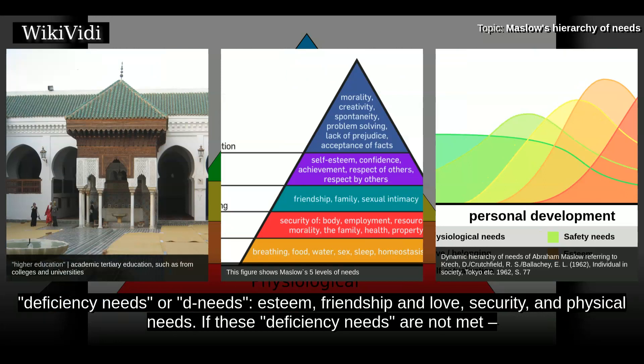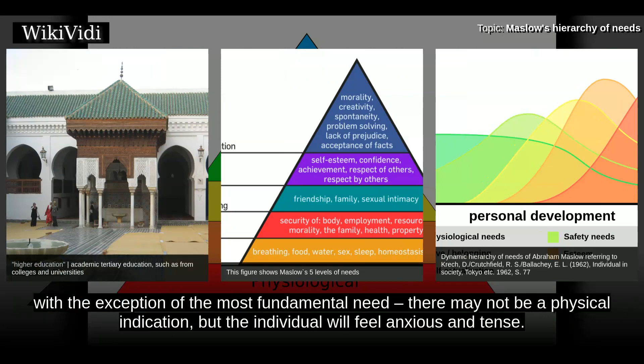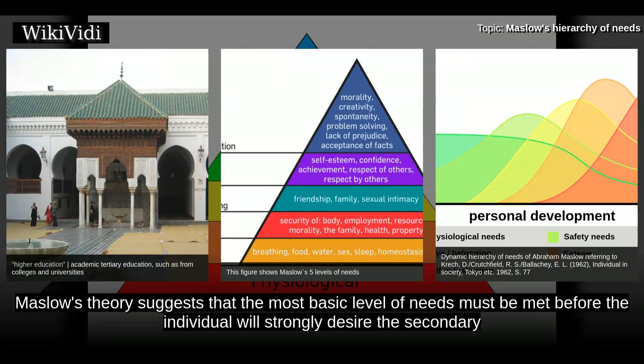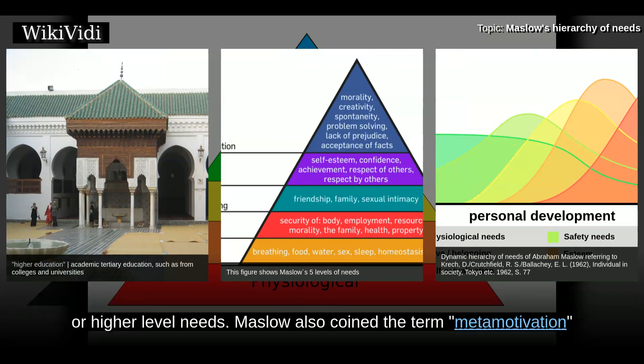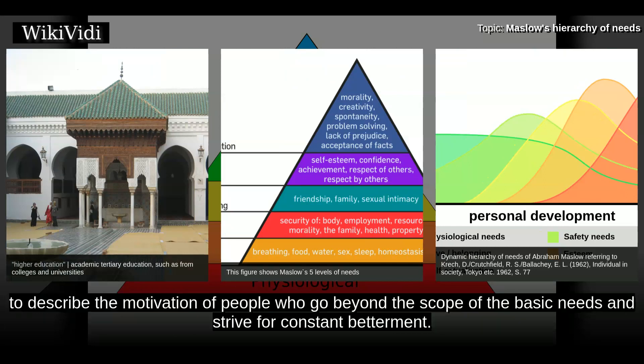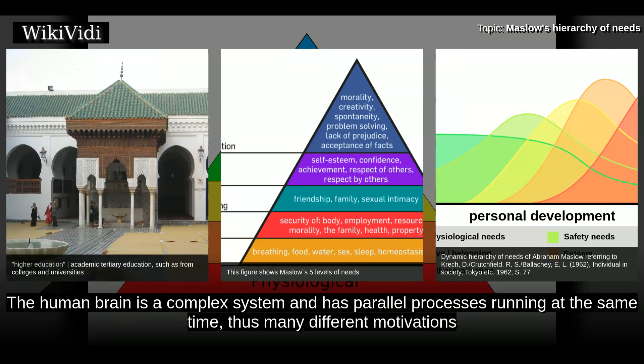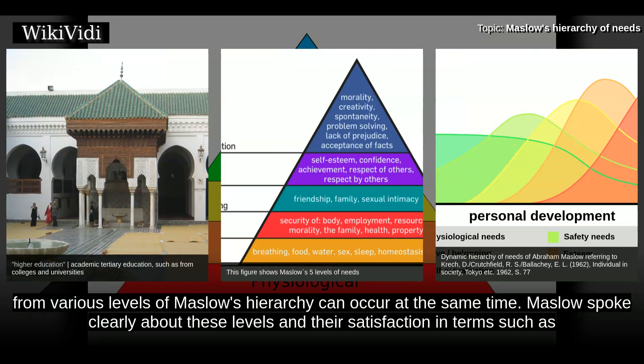If these deficiency needs are not met, with the exception of the most fundamental need, there may not be a physical indication, but the individual will feel anxious and tense. Maslow's theory suggests that the most basic level of needs must be met before the individual will strongly desire secondary or higher level needs. Maslow also coined the term meta-motivation to describe the motivation of people who go beyond the scope of basic needs and strive for constant betterment. The human brain is a complex system with parallel processes running at the same time, thus many different motivations from various levels of Maslow's hierarchy can occur simultaneously.